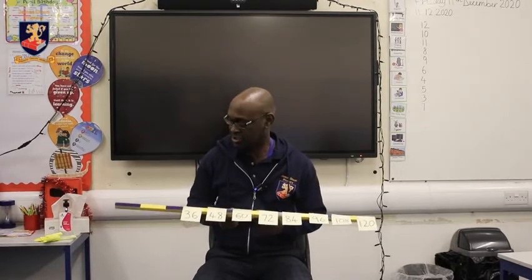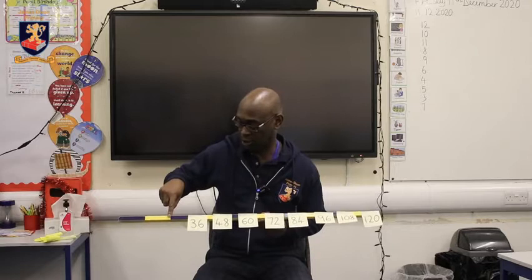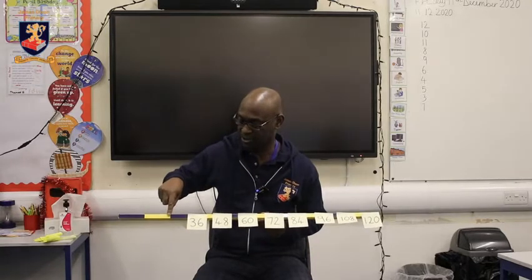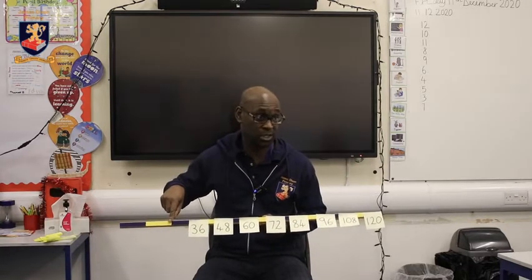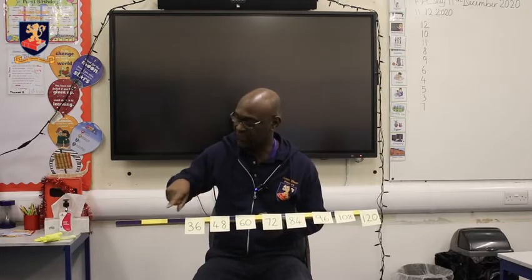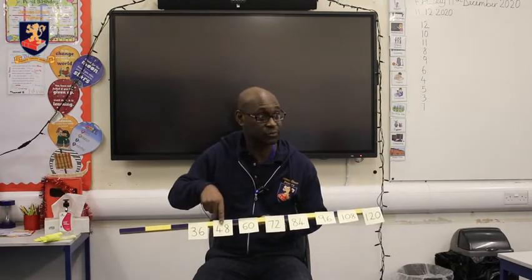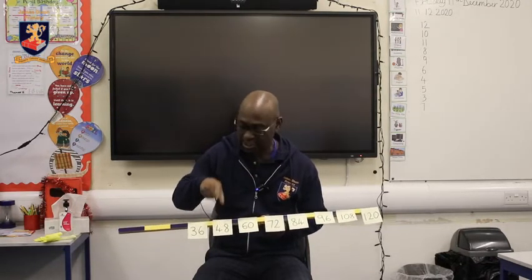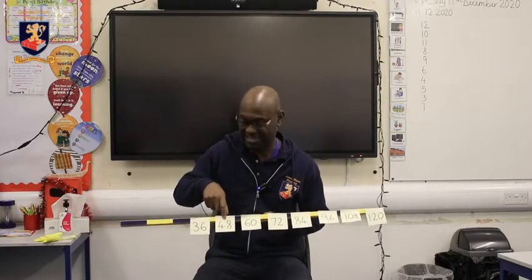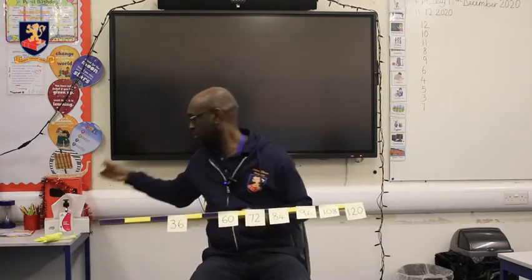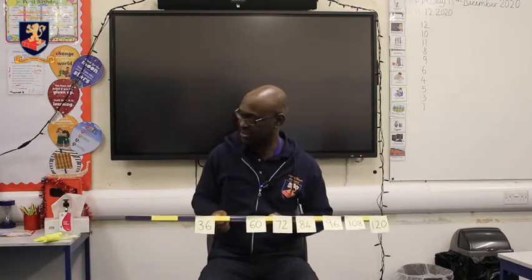Now, I just told you that 2 lots of 12 was 24. If I double 2, I'm going to get to 4. If I double 24, I'm going to get to 48. So 4 lots of 12 is 48. I'm going to remove that. Shall we count together?